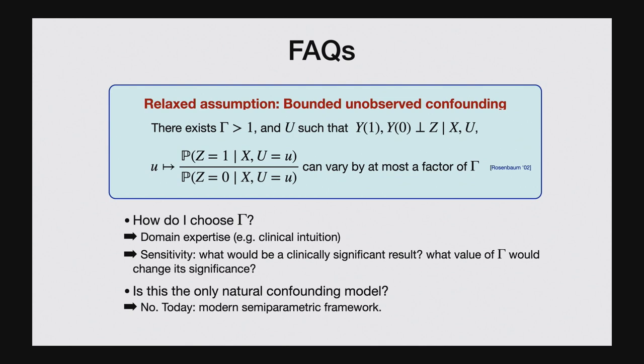Another useful heuristic is to look at increasingly larger values of gamma and see where your worst-case bound crosses zero. For example, in the observational study that found smoking causes lung cancer, for there to be an unrecorded variable to call the findings into question, this hormone would have had to make you more likely to smoke by something like nine times more — a number most people thought was physically impossible. This really instilled confidence in the result of the study.